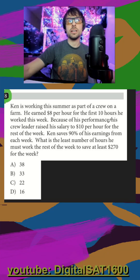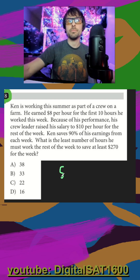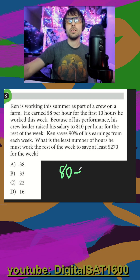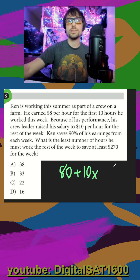Ken is working this summer as part of a crew on a farm. He earned $8 per hour for the first 10 hours he worked this week, so that's going to be $80 so far. Because of his performance, his crew leader raised his salary to $10 per hour for the rest of the week, so that's going to be $10 for an unknown amount of hours.